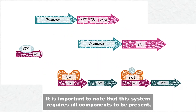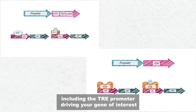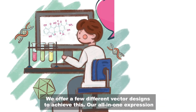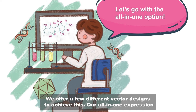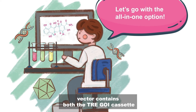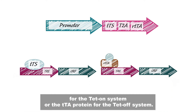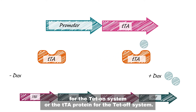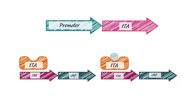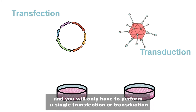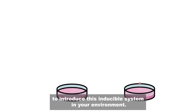It is important to note that this system requires all components to be present, including the TRE promoter driving your GOI and the regulatory proteins associated with the inducible system you're using. We offer a few different vector designs to achieve this. Our all-in-one expression vector contains both the TRE-GOI cassette and the rtTA/tTS regulatory proteins for the TET-on system, or the tTA protein for the TET-off system. This option reduces experimental complexity since all components are present on a single vector and you will only have to perform a single transfection or transduction.